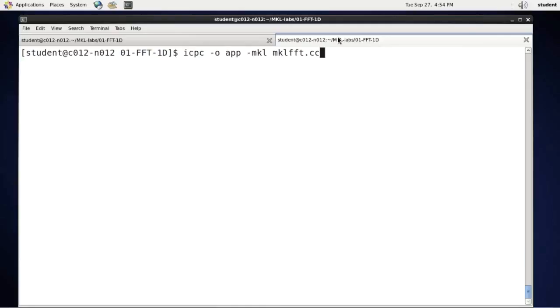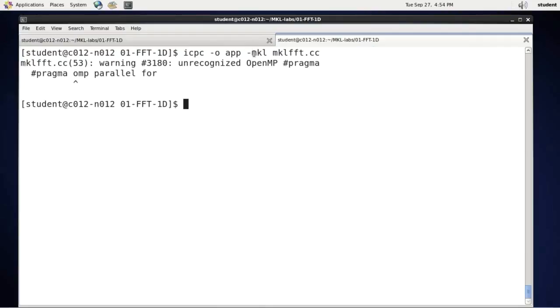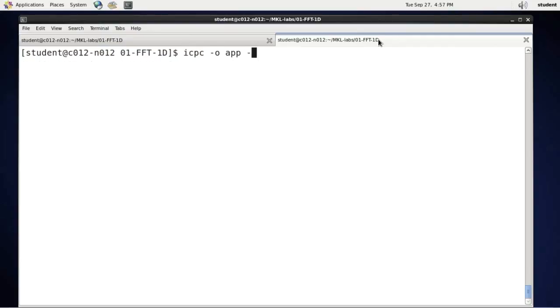So recompiling. MKL uses OpenMP behind the scenes, but now I'm using OpenMP explicitly in my code, so I need to tell the compiler about it. Because I'm explicitly using OpenMP, I need to include the flag qopenmp, and I need to link to the math kernel library. And here is the source file name.